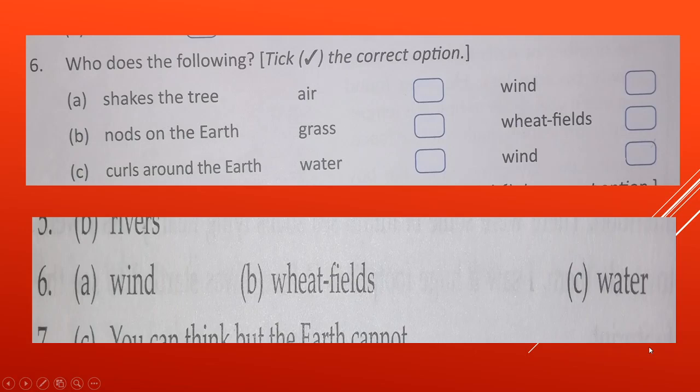Now see, curls around the earth. What curls around the earth, all around? To be in a circular position. Curl means to be in a circular position. Water or wind? Yes. Water.